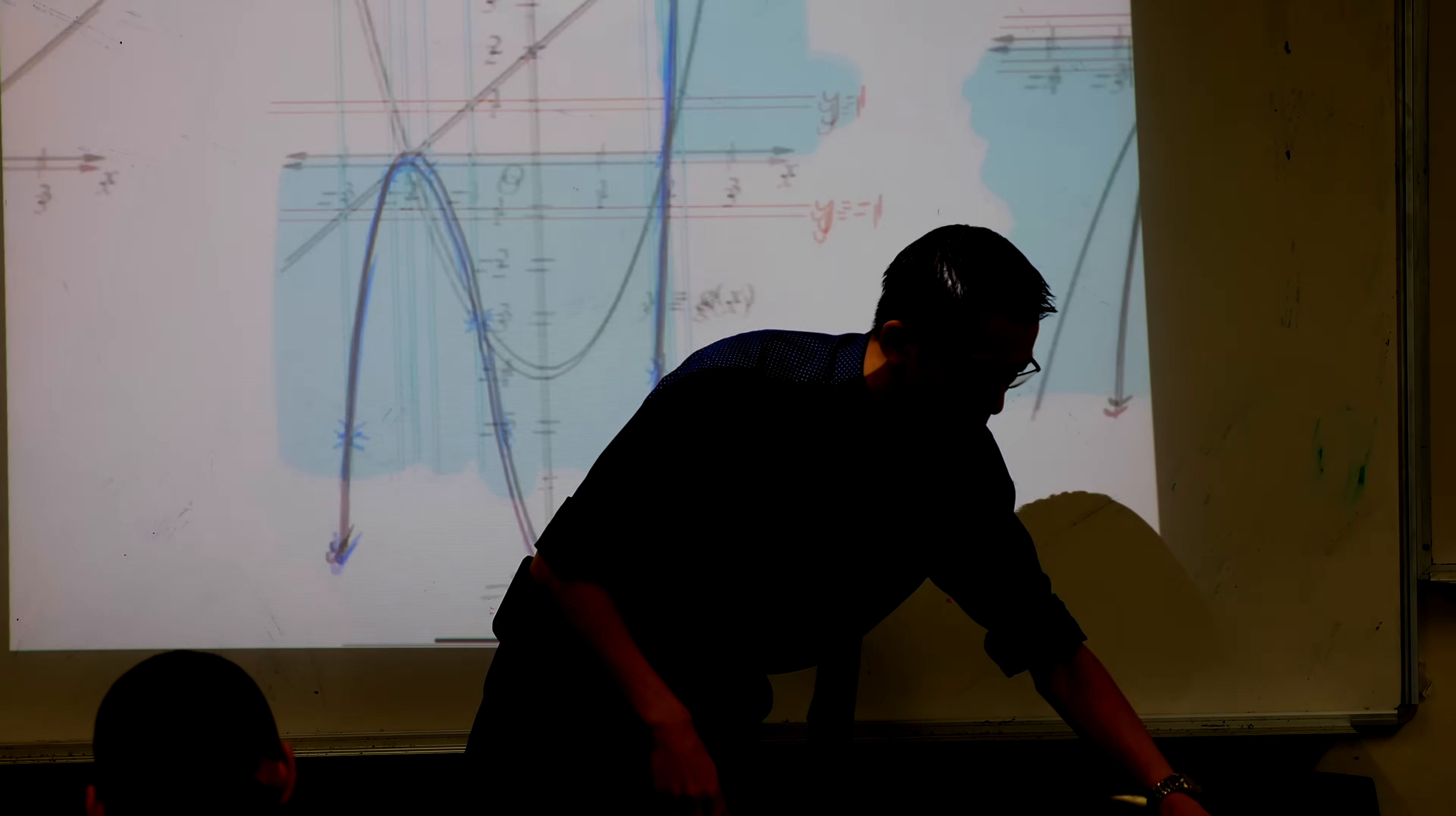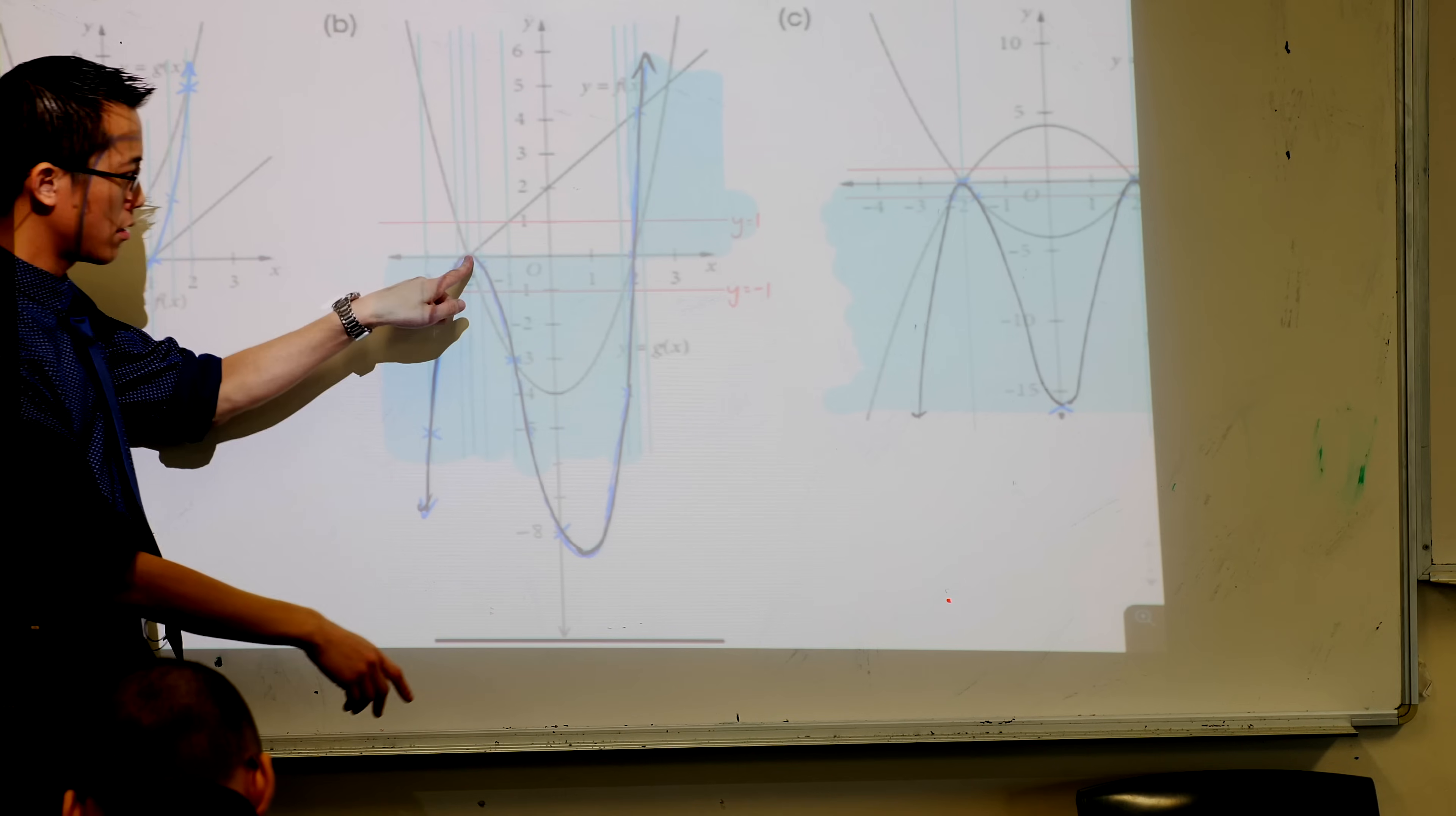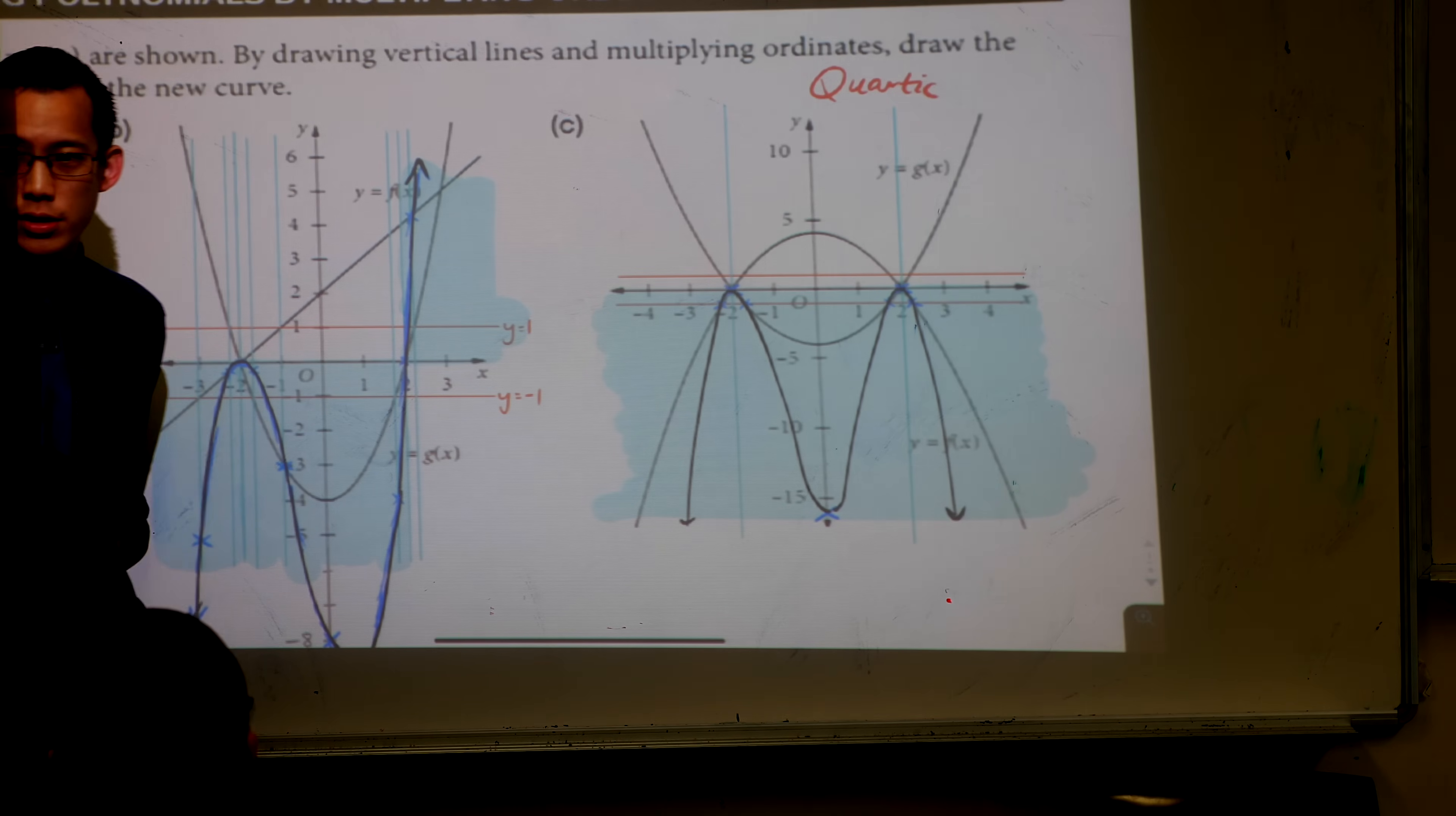This is a cubic. Part B was a cubic. Do you remember that? How many stationary points does it have? One. Two. Two. One. Two. This guy here, it's a parabola, right? How many stationary points does it have? One. This guy here is a quartic. How many stationary points does it have? Three.